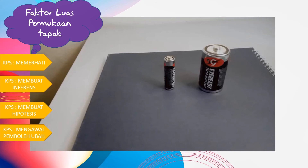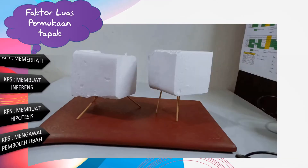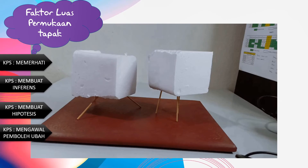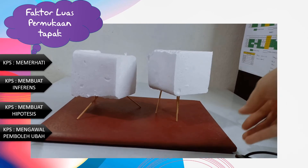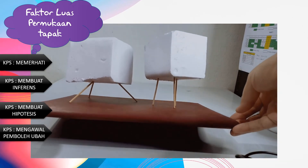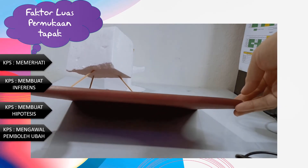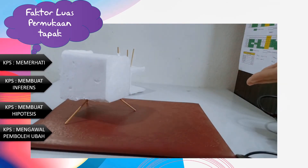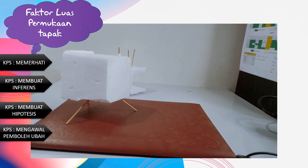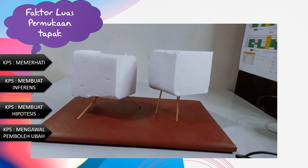Amali yang kedua ini ialah meletakkan lidi pada gabus — satu luas tapaknya besar, satu lagi kecil. Luas tapak yang besar, walaupun dicondongkan agak tinggi, tetap tidak jatuh. Jadi kita boleh nampak, semakin bertambah luas tapak objek, semakin bertambah kestabilan objek tersebut.